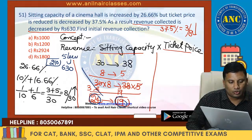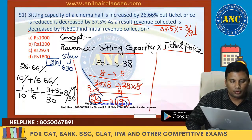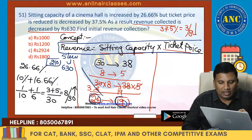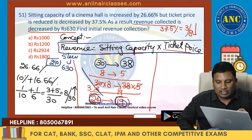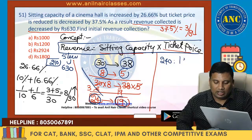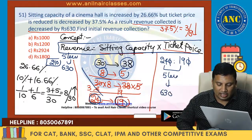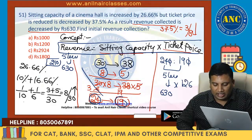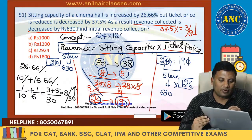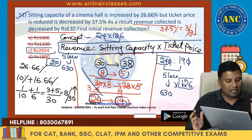So it is 2 to 10. Now find the initial revenue collection. Initial revenue is 24 parts. Revenue is seating capacity × ticket price. Initial value: seating capacity 30→38 increased, ticket price 8→5 decreased. 30×8 = 240 and 38×5 = 190. Simplifying: 5 less — this is 630, which is 5×126. Initial revenue 24×126 — unit digit is 4.